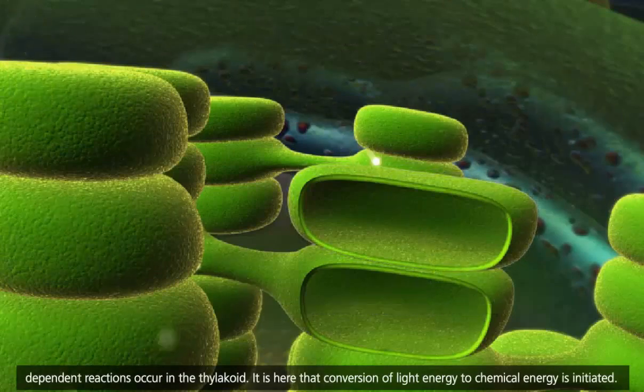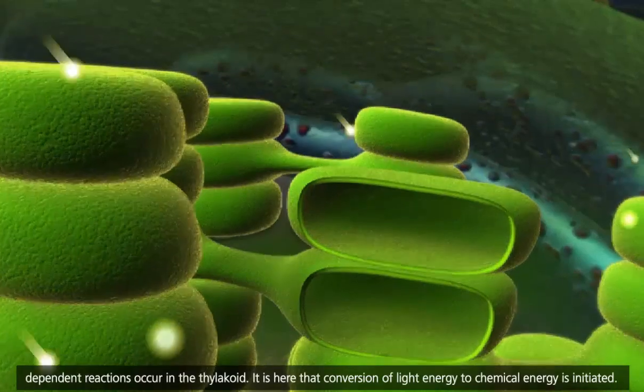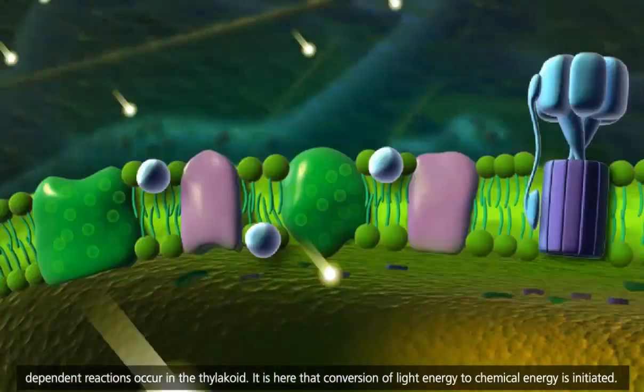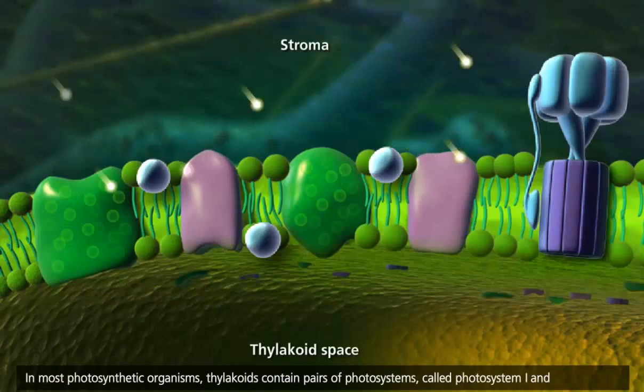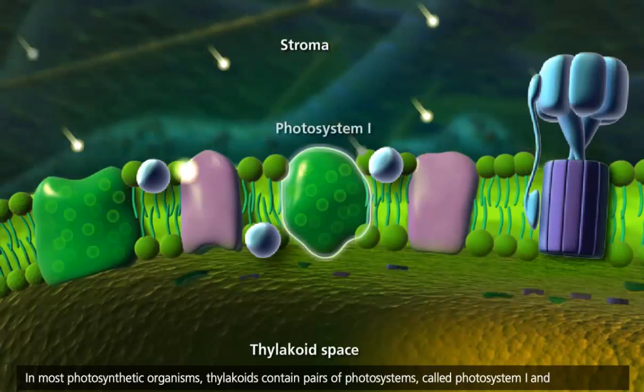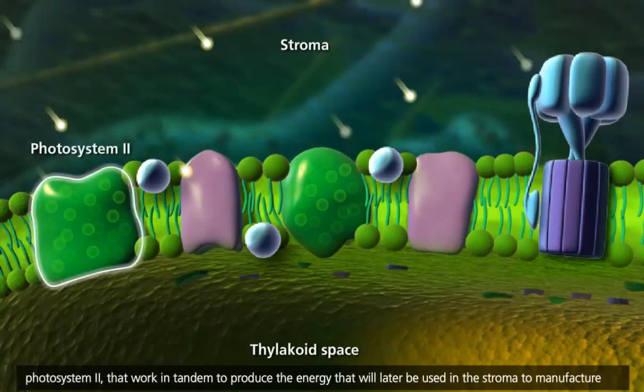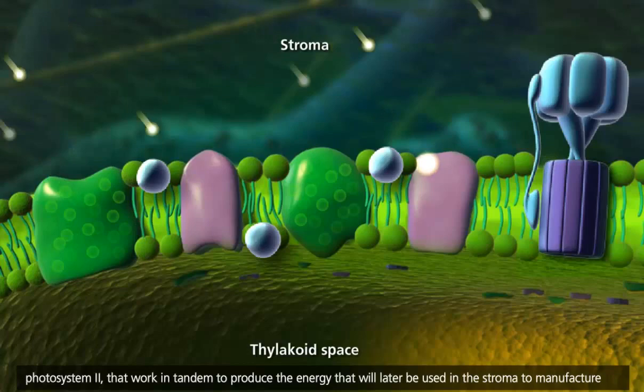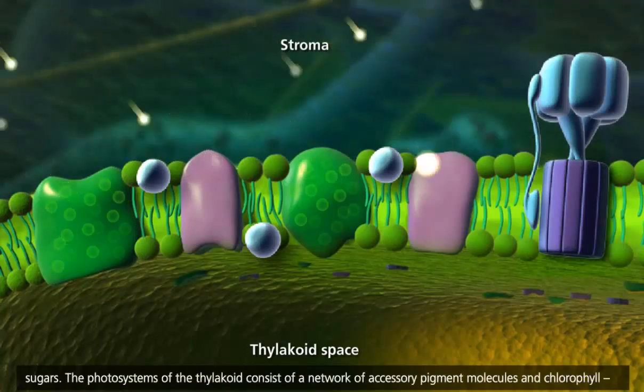It is here that conversion of light energy to chemical energy is initiated. In most photosynthetic organisms, thylakoids contain pairs of photosystems, called photosystem I and photosystem II, that work in tandem to produce the energy that will later be used in the stroma to manufacture sugars.